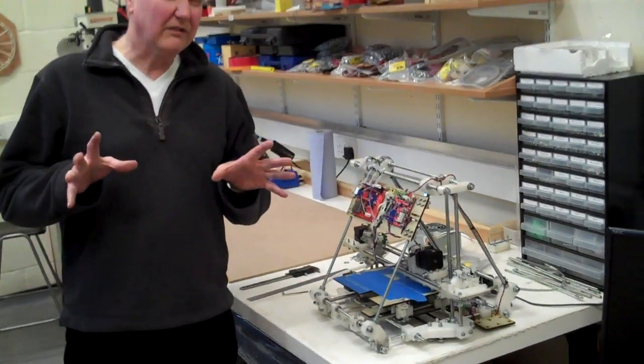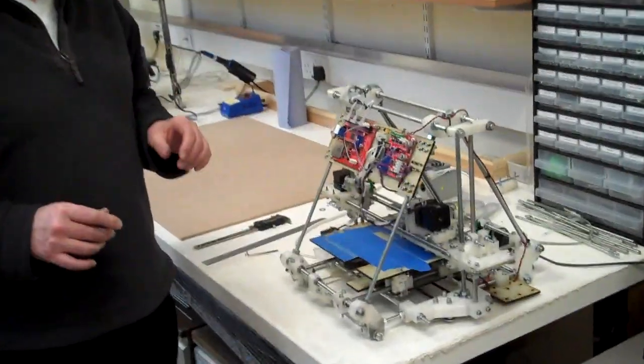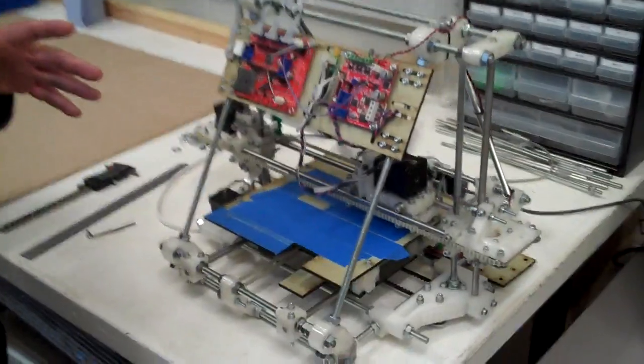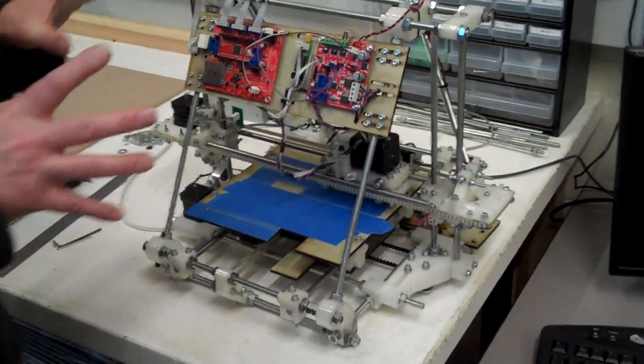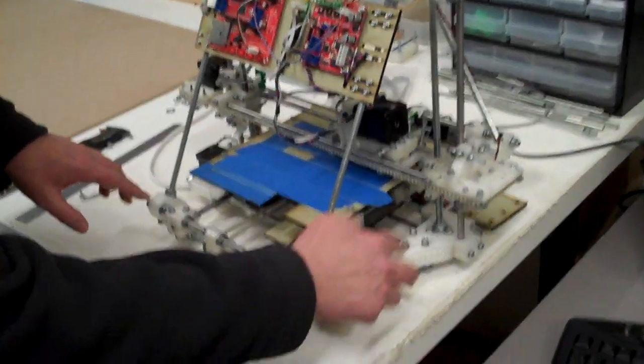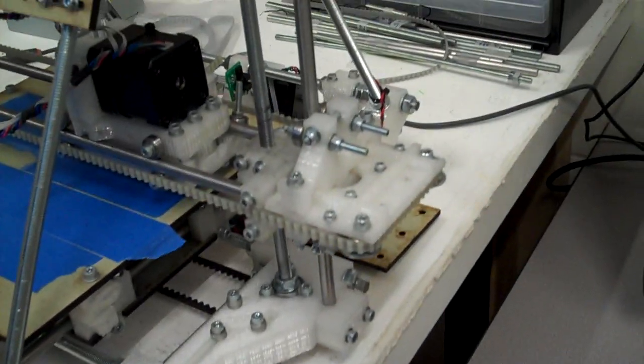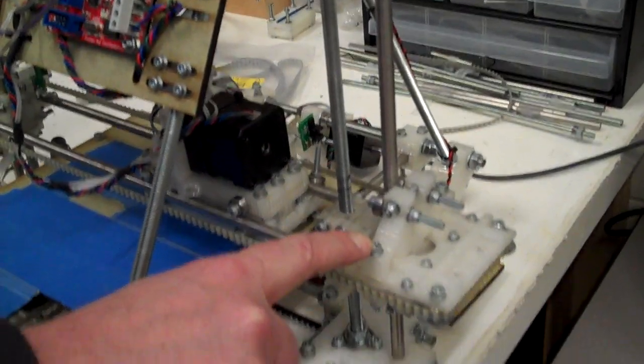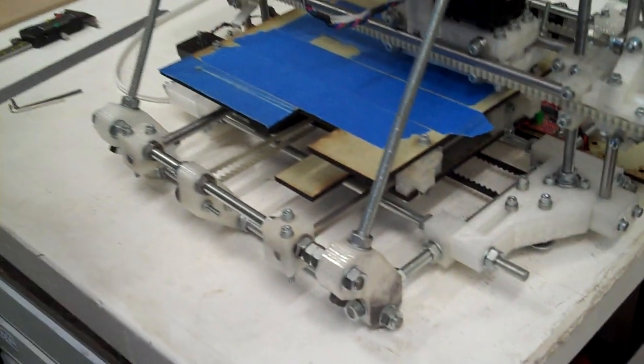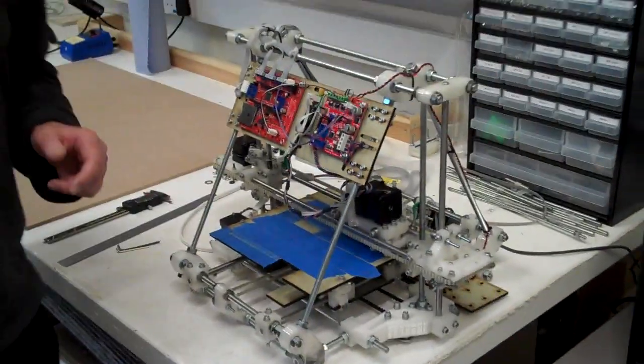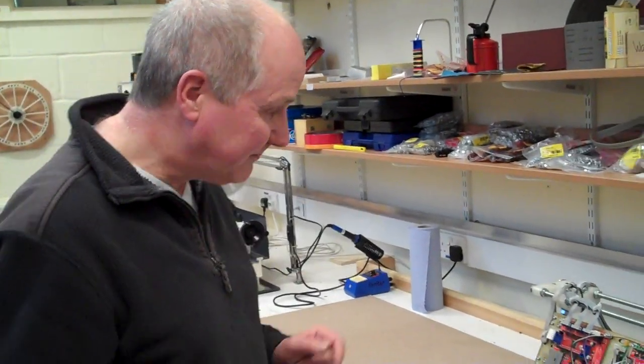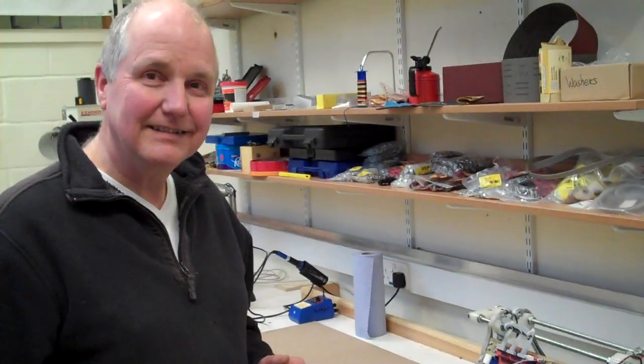It doesn't reproduce itself completely, but what it can do is make a significant fraction of its own parts. This machine can make all of these whitey silvery colored parts that you can see distributed around all over it. And if you count them up and you ignore nuts and bolts, then that's about half the machine. If you include nuts and bolts, the entire machine is made from nuts and bolts though, as you can see, that's not true. So it's about 50% self-replicating at the moment.